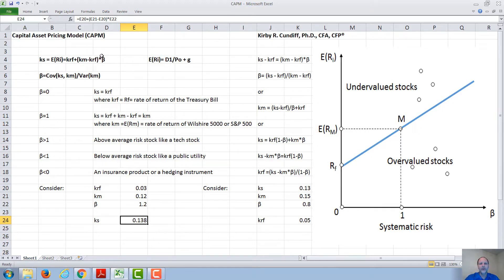The CAPM equation can also be arranged to solve for other variables. Here, for example, we rearrange the CAPM equation and solve for beta, getting beta equals Ks minus K risk-free divided by K market minus K risk-free.